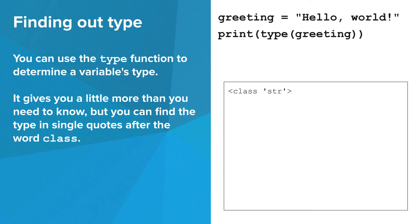Okay, check out this example program in the upper right. Unlike the program that we saw a few slides ago, this program prints the type of the variable greeting rather than the value. You can do this using the type function. The output is class str in triangle brackets, and this might look a little weird,